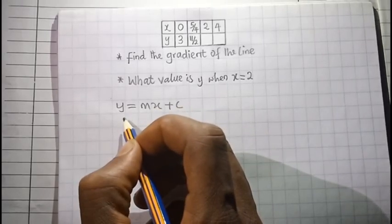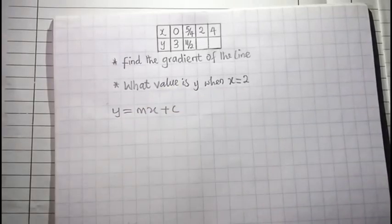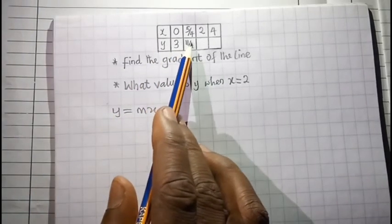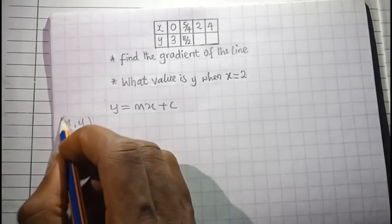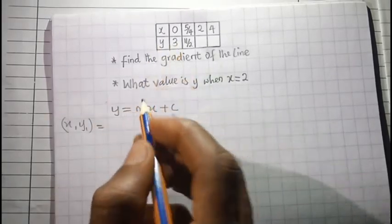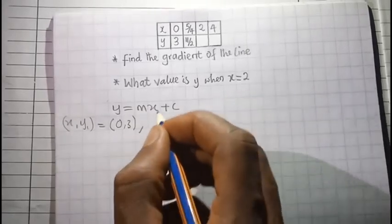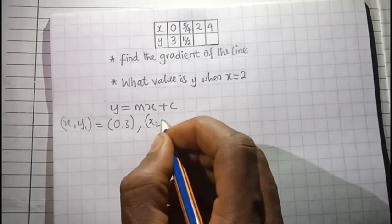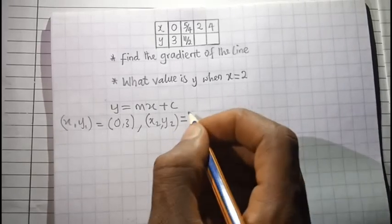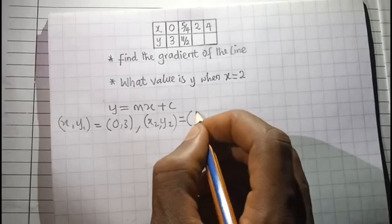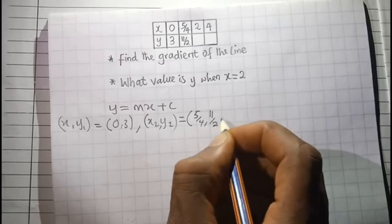Here, y is a function of x, m is the slope, and c is a constant which is the value of y when x is equal to 0. We can use two coordinates: x1, y1 equal to 0 and 3, then the second coordinates x2, y2 equal to 5 over 4 and 11 over 2.